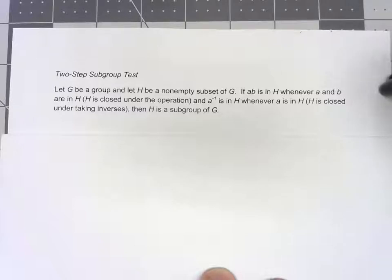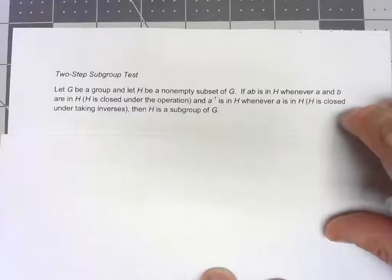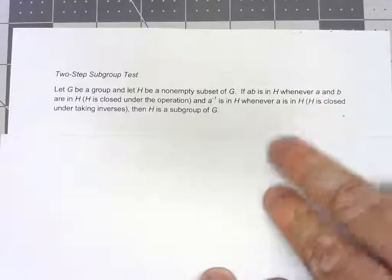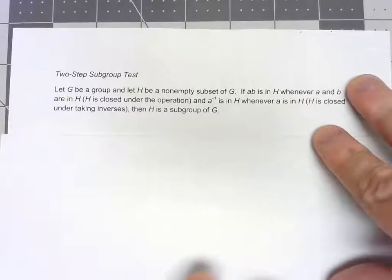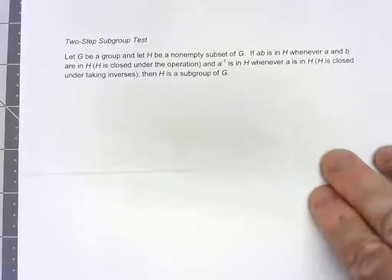Basically, it says that if you're checking for a subgroup, you only need to check two out of the four properties that we normally have to. I'm not going to do a big formal proof of this, but I do want to sketch out why this is.